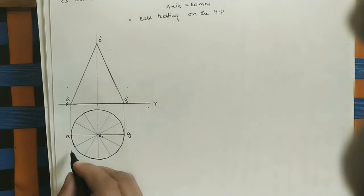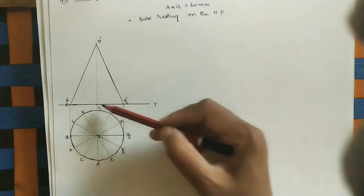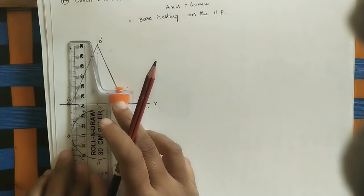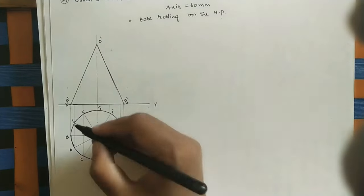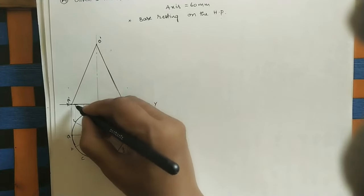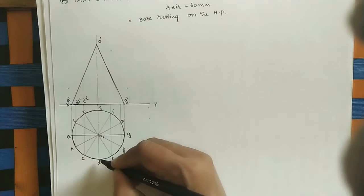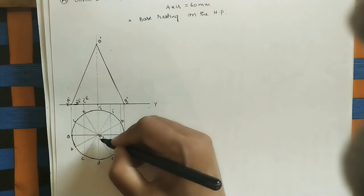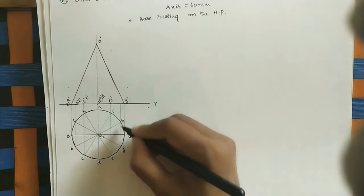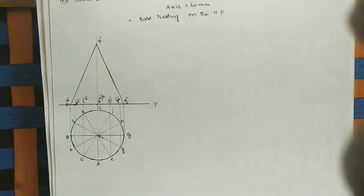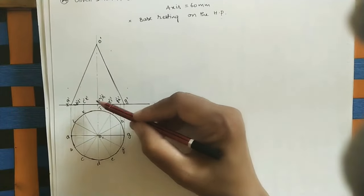Mark the intersection points on the circle starting with A. At all these points draw projector lines up to the XY line. Mark the front view intersection points: A gives A-dash; B and L give B-dash; C and K give C-dash and K-dash; D, J, and center give D-dash, J-dash, and O1-dash; E and I give E-dash, I-dash; F and H give F-dash, H-dash. Join all these points to the apex O-dash to complete the generator lines in the front view.